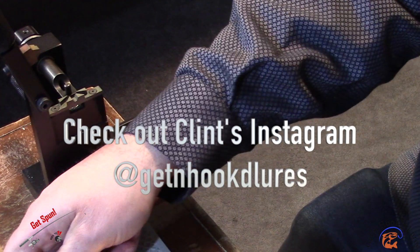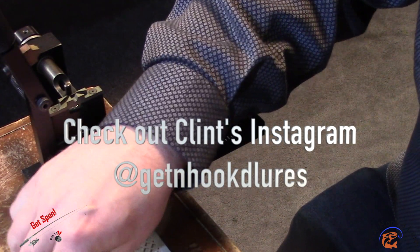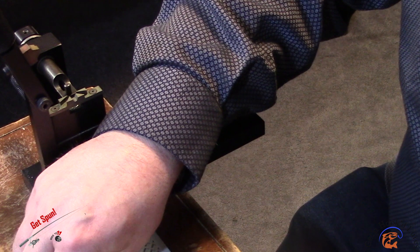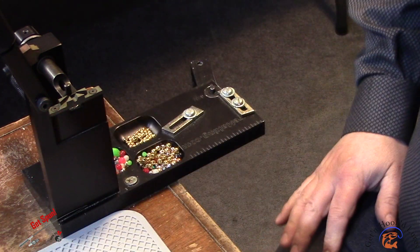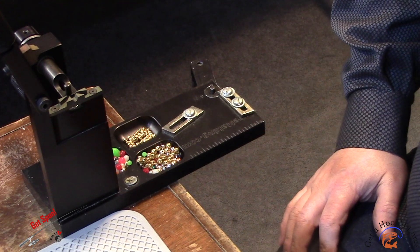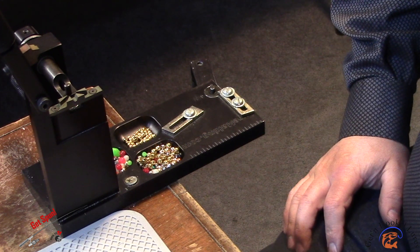These lures weigh about three quarters of an ounce, so they're quite heavy. They're going to be used for targeting large pike, musky, lake trout—whatever the monsters are that you want to go after. This should stand up to that.